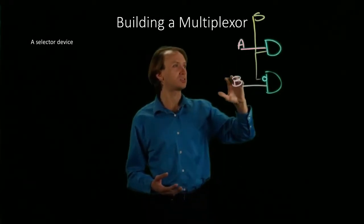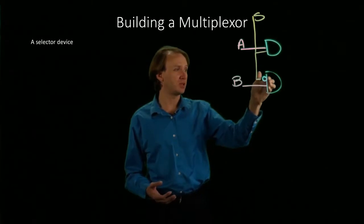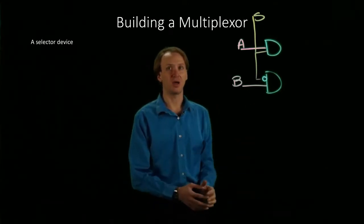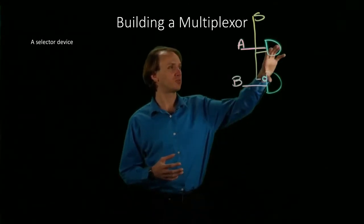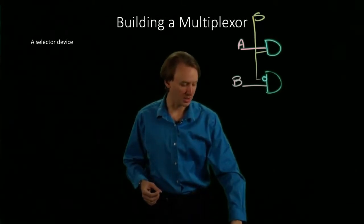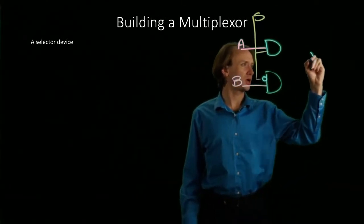Now, this allows us to say, do we want A or B, but we also need to combine that. We want to put the results of both of those onto one line. So we will do that using an OR gate.